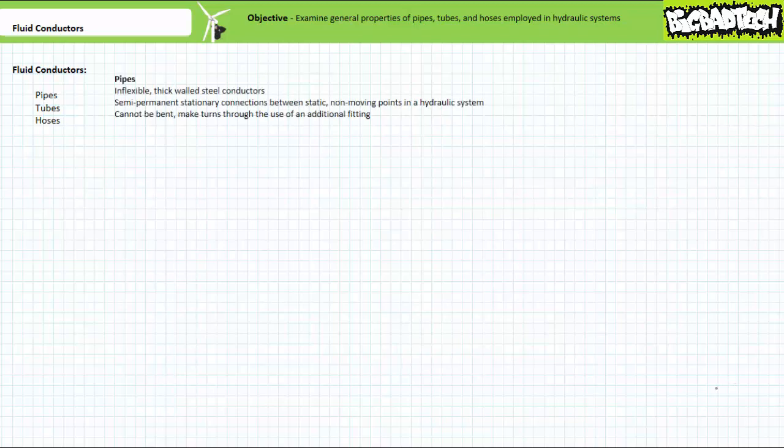Pipes are inflexible, thick-walled steel conductors designed for semi-permanent stationary connections between static, non-moving points in a hydraulic system. Pipes cannot be bent and can ordinarily only make turns through the use of an additional fitting.